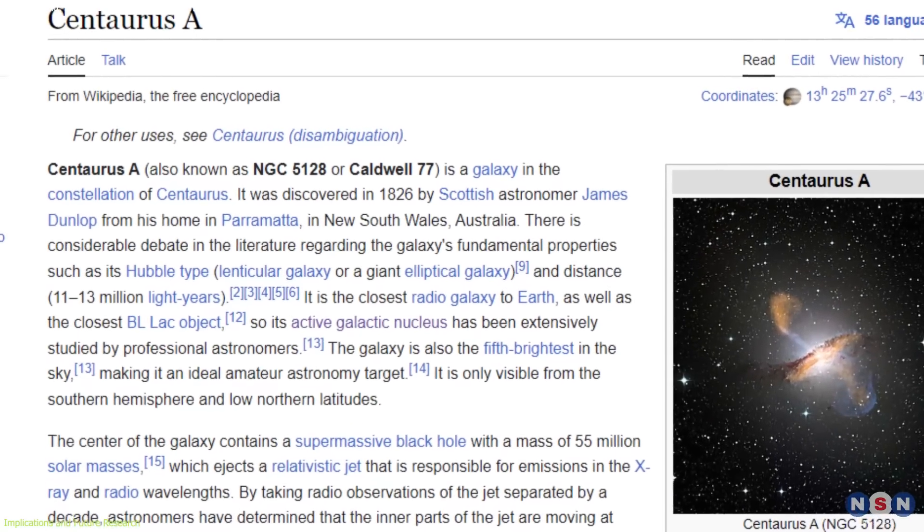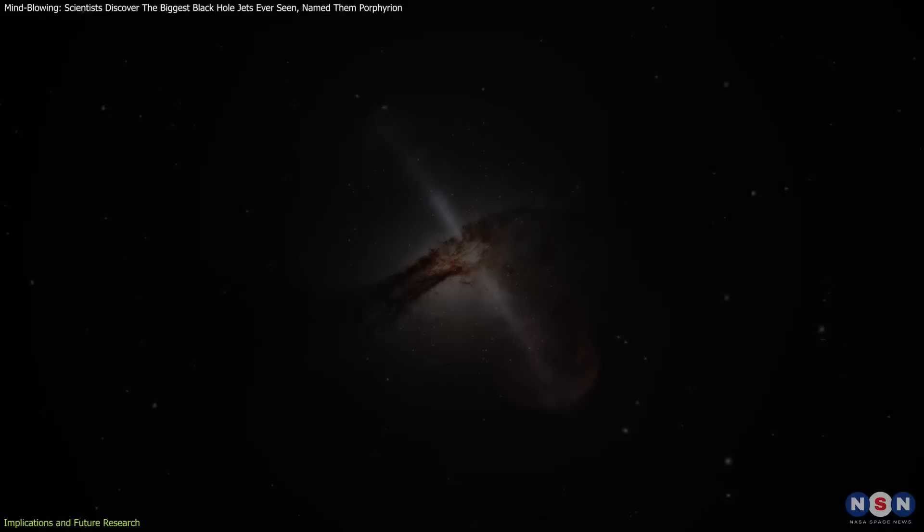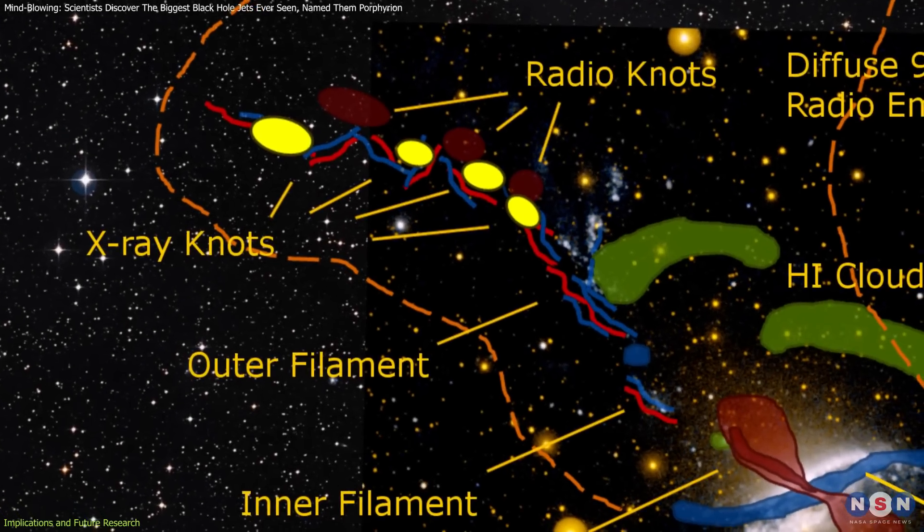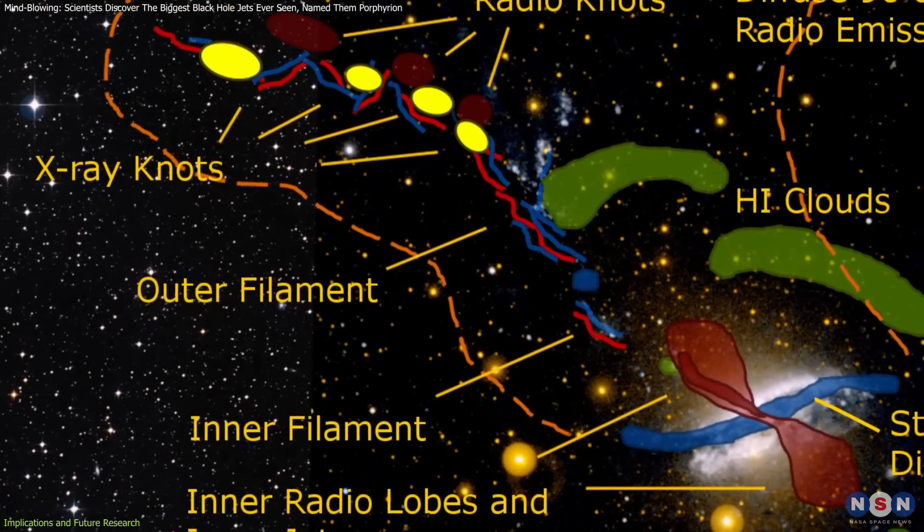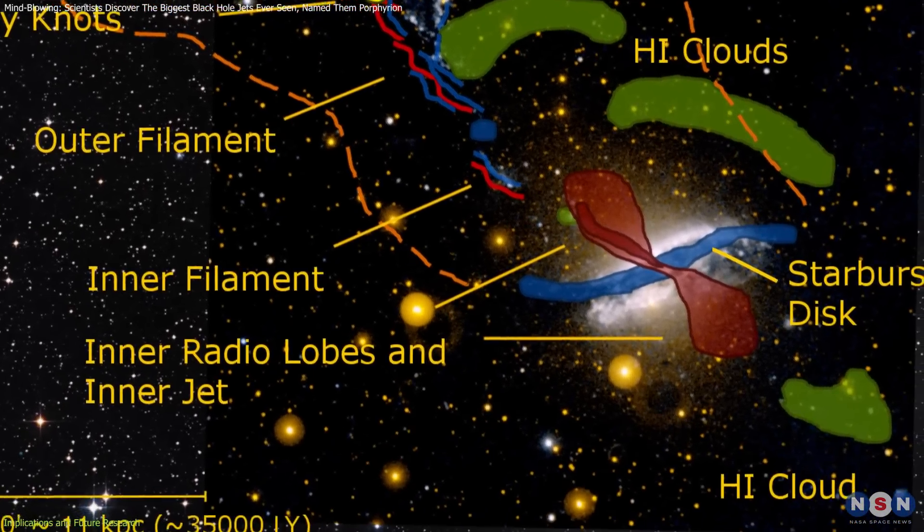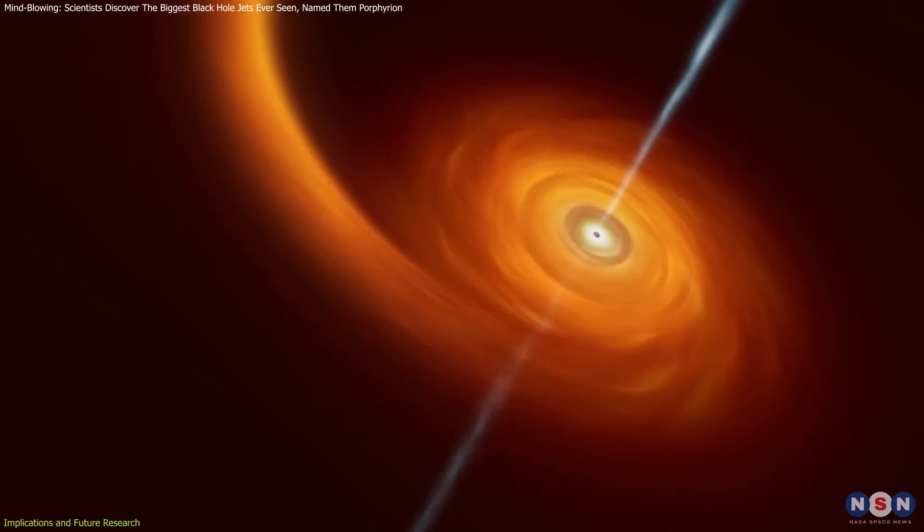Another key example is Centaurus A, the closest major jet system to Earth, which spans around 10 Milky Way diameters. Centaurus A is a well-studied case that demonstrates how black hole jets can dramatically influence their surroundings, giving scientists valuable insights into jet behavior and impact.